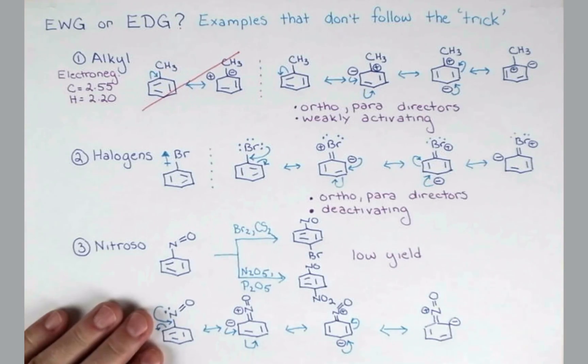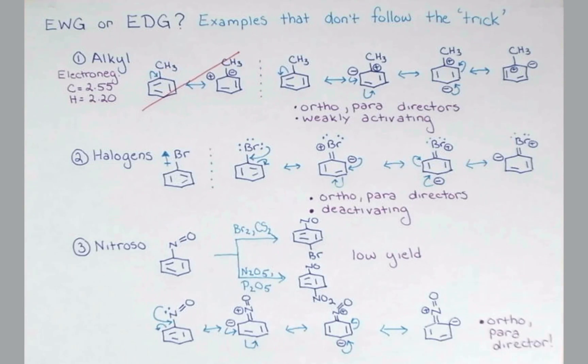So the nitroso group does not work with my trick and is an ortho para director, though the para products dominate in this inefficient reaction because of steric hindrance of an electrophile approaching at the ortho positions.